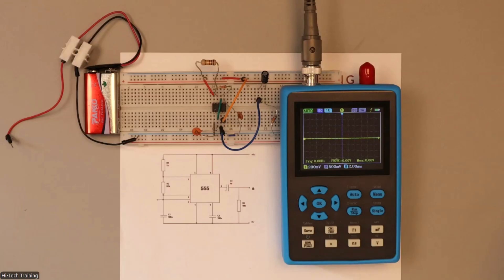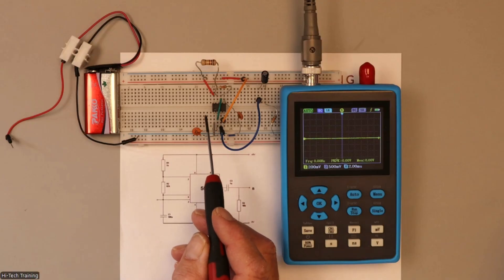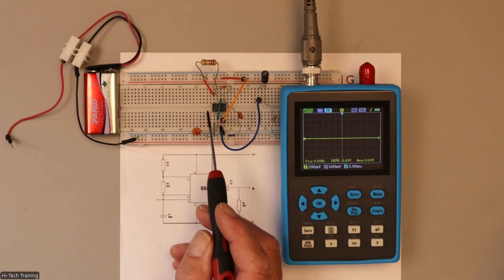Hi, I'm Paul from Hitech Training. I'm going to show you a little bit about the 555 timer. The reason they call it the 555 is that there are three resistors inside the timer chip and each one of them is 5k ohm. So that's where the name came from, 555.